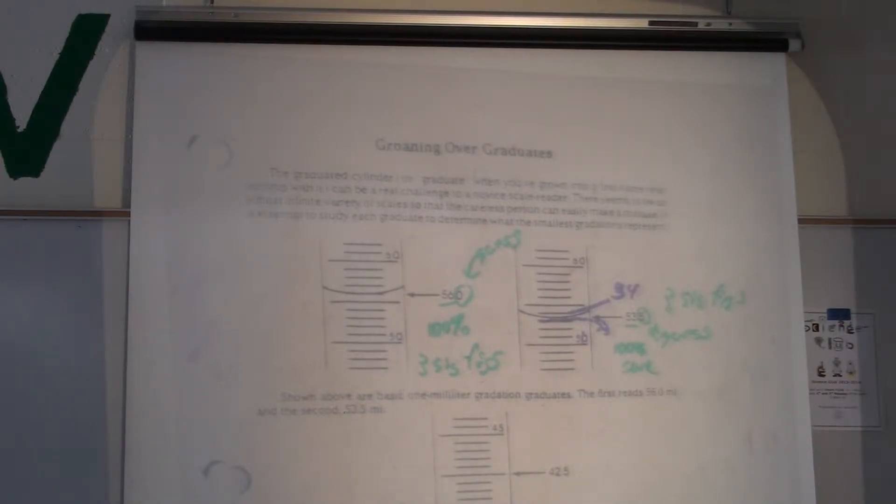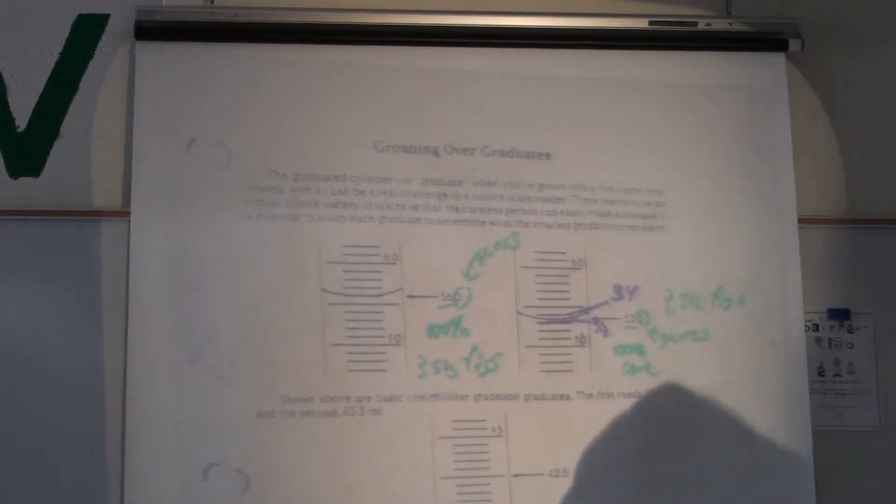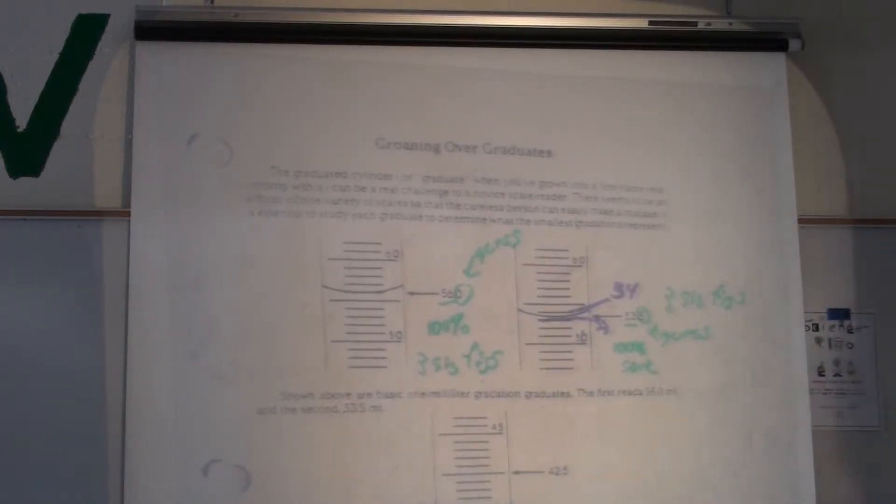Now, sometimes graduated cylinders go up by .5, like they did down here. If you're going to guess out to the tenths, you must go up by ones.